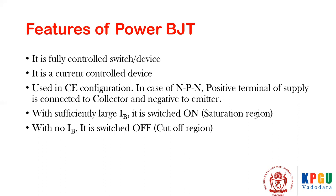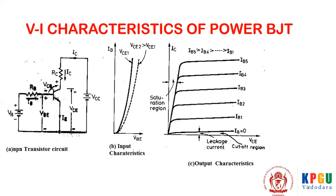In the case of NPN, the positive terminal of the supply is connected to the collector and negative to the emitter. With a sufficiently large base current it is switched on — this is the saturation region. With no base current or very small base current it is switched off, that is in the cutoff region. The base-emitter junction is given a base current IB to turn it on and off.